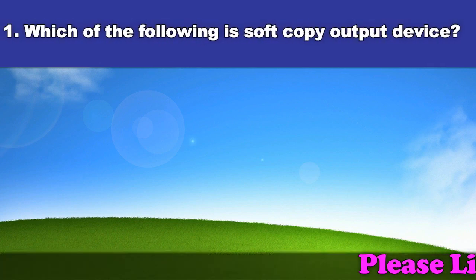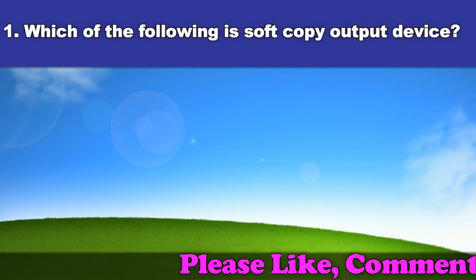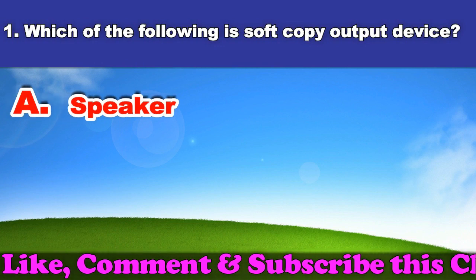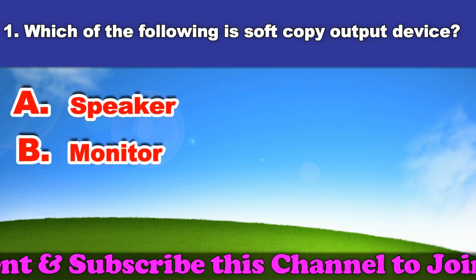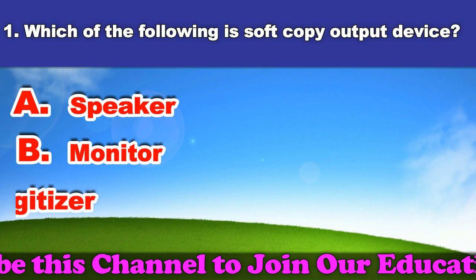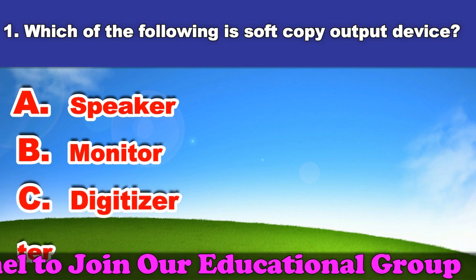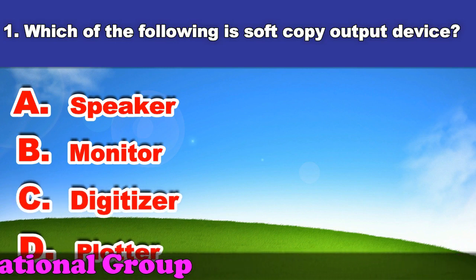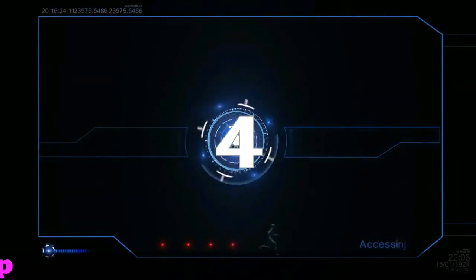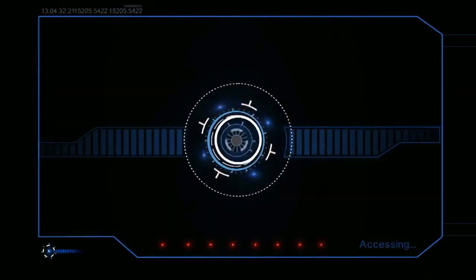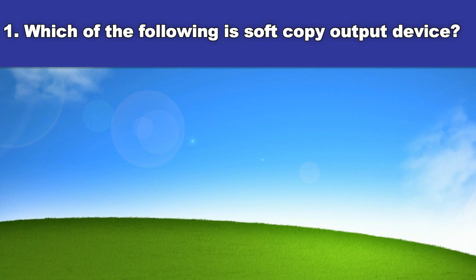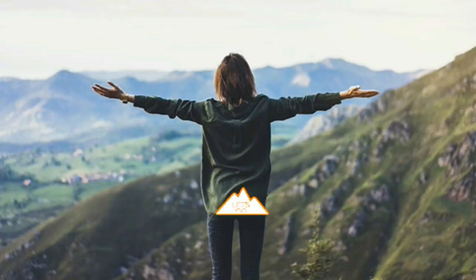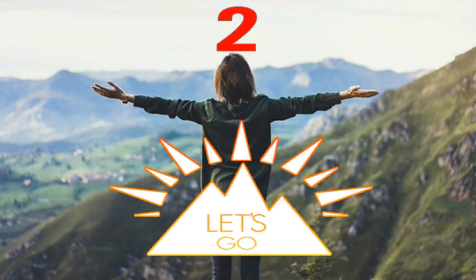First question: Which of the following is a soft copy output device? A. Speaker. B. Monitor. C. Digitizer. D. Plotter. And the answer is speaker.